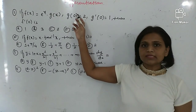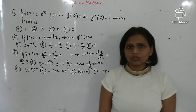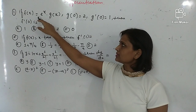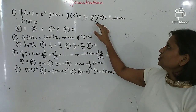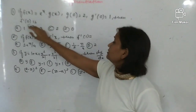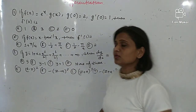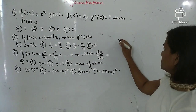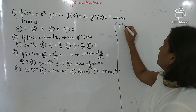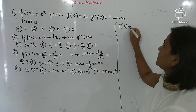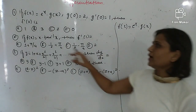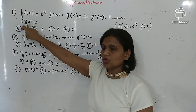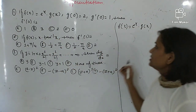These are questions on differentiation. First question: f(x) is equal to e^x into g(x), where g(0) and g'(0) values are given, and we have to find out the value of f'(0). f' means the derivative of the function, so first differentiate this function.